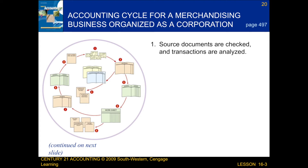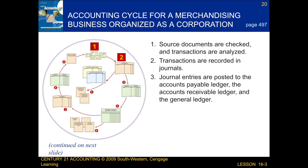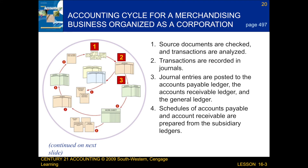First, source documents are checked, and then transactions are analyzed. Next, the transactions are recorded in journals. After that, the journal entries are posted to the accounts payable ledger, the accounts receivable ledger, and the general ledger. Following that, the schedules of accounts payable and accounts receivable are prepared from the subsidiary ledgers. Then, a worksheet is prepared from the general ledger.